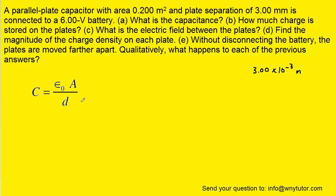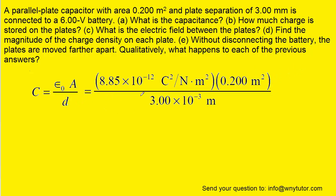So with that in mind, we can just plug in. Notice the constant epsilon is given in the parentheses here. When we simplify this, we get a value of approximately 5.90 times 10 to the minus 10, and then the standard unit of capacitance is farads. So this would be the correct answer to part A.